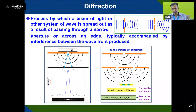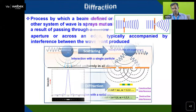Similarly, if you see Young's double-slit experiment, you can see here two slits. You can see how these wave fronts are generated. With these wave fronts, you will get either constructive or destructive interference. When d sin θ = mλ, where m = 1, 2, 3, you will get constructive interference in Young's double-slit experiment. If you see m plus half lambda, then you will get destructive interference.